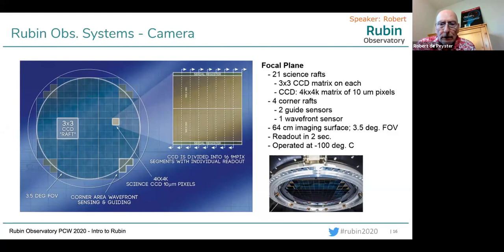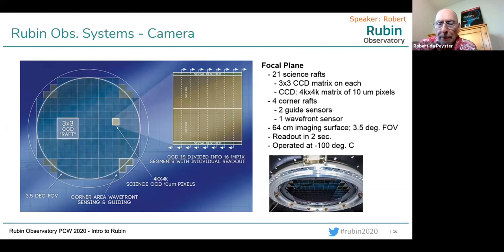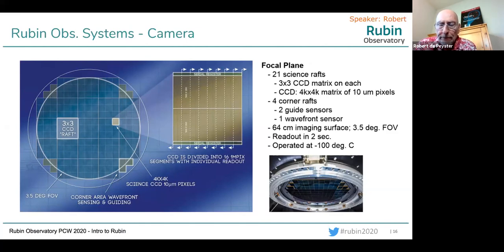The focal plane supports the 3.5-degree field of view of the camera and is cooled to minus 100 degrees Celsius to keep the sensors happy. There's a lot more information about the camera — particularly about optics and imaging — but that's for another time. I hope this overview was helpful, and thanks for your attention.